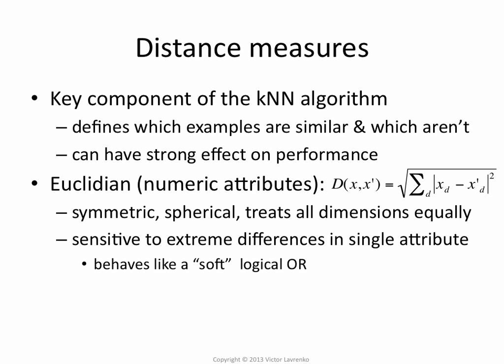The most natural distance function for numeric attributes is just Euclidean distance or the L2 distance. Here what you're doing is for each attribute d, you take the difference between the testing and the training values for attribute d, square it, add it up. So Euclidean function, it's nice in many ways. It's symmetrical, it's spherical, it treats all dimensions equally. A lot is well known about this function, so it's sort of a known quantity.